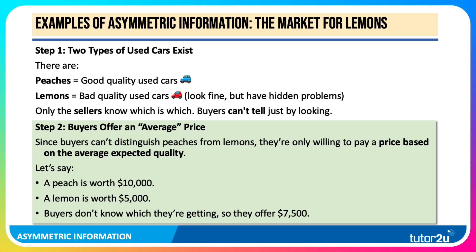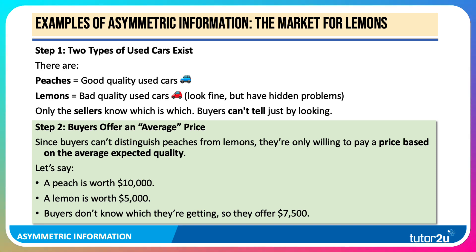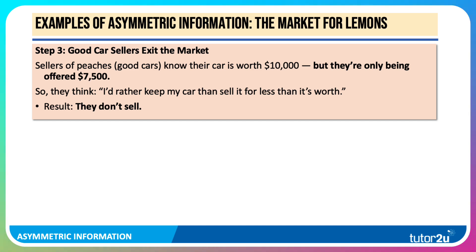Step two: the average price. Because buyers can't distinguish peaches from lemons, they're only willing to pay a price based on the average expected quality. So let's say a peach is worth $10,000 but a lemon is only worth $5,000. Buyers don't know which they're getting, so they offer a midpoint of $7,500. Sellers of peaches know their car is worth $10,000, but they're only being offered $7,500 — so they'd rather keep their car, maybe sell it privately, than sell it for less than it's worth. They take it off the market.